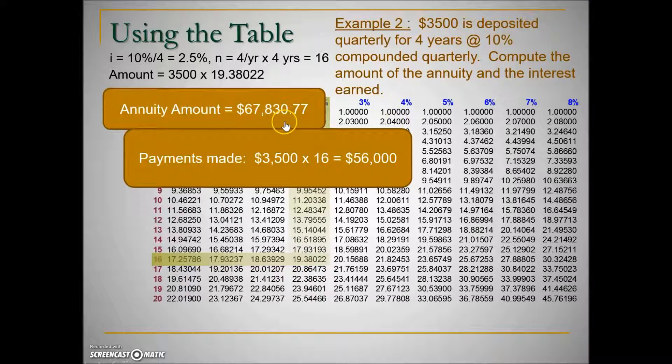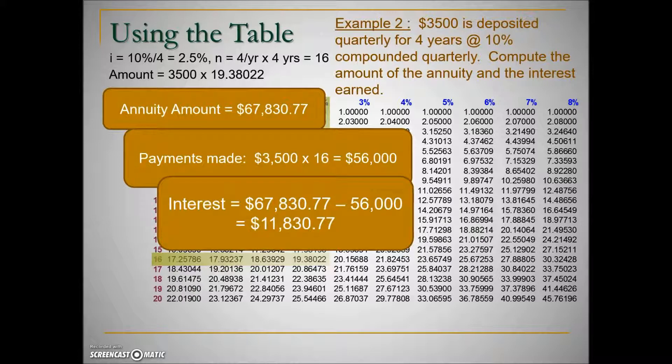So of this balance, $56,000 of that is coming from the individual. The difference between the amount of the annuity and the payments will give us the interest. So in this four-year period, this account grew or accumulated interest equal to $11,830.77.